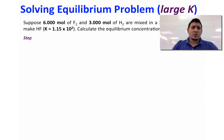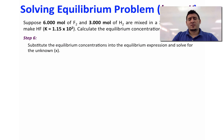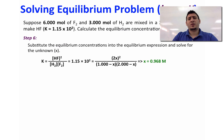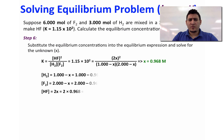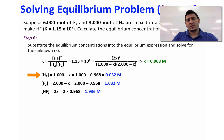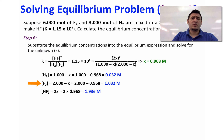In step 6, substitute these equilibrium concentrations into the expression of the equilibrium constant and solve for X. X is equal to 0.968 M. Therefore, the equilibrium concentration of hydrogen is 0.032 M, and the equilibrium concentration of fluorine is 1.032 M.